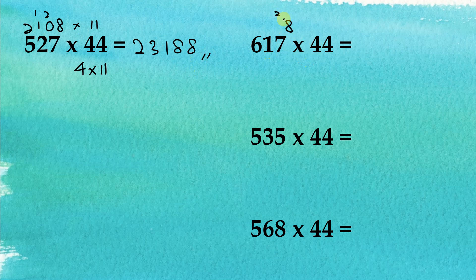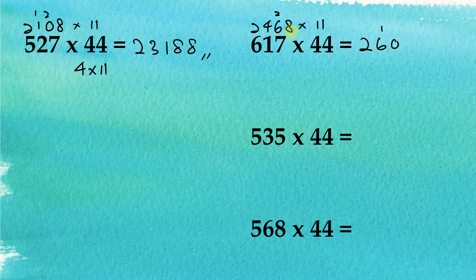For 611 multiplied by 4: 4 times 1 is 4, 4 times 1 is 4 plus 0 is 4, and 4 times 6 is 24, giving 2444. Then 2444 multiplied by 11: the first digit is 2, then 6, then 4 and 4 sum to 8 but with carry becomes... working through the digits gives the answer 26884. The final result stated is 27148.